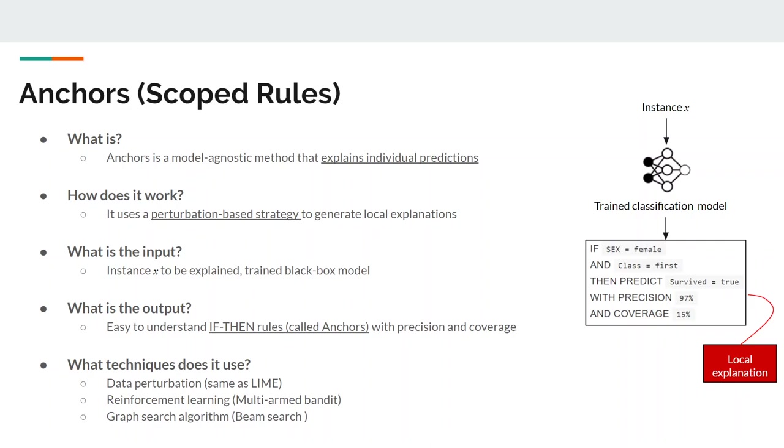The ANCHORS approach deploys a perturbation-based strategy to generate local explanations for predictions of black box machine learning models. It receives an instance x to be explained and it generates easy to understand if-then rules called ANCHORS. These rules are reusable since they are scoped. ANCHORS include the notion of coverage, stating precisely to which other possibly unseen instances they apply.